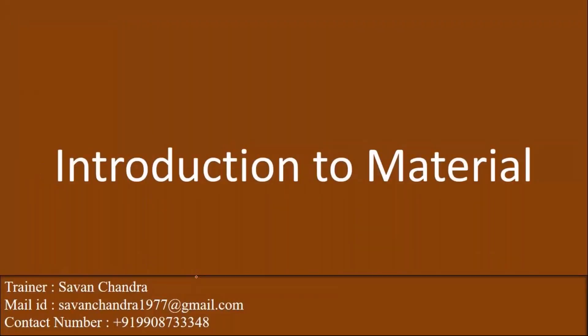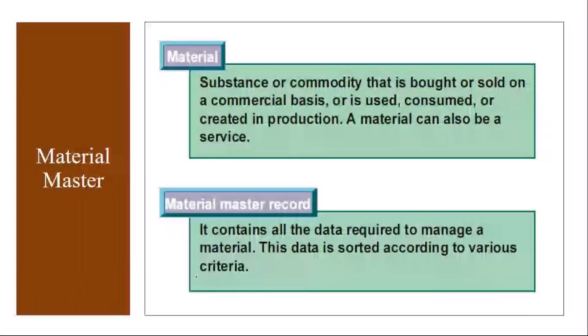First, we will start with an introduction to material. A material can be a substance or commodity that is bought or sold on a commercial basis, or is used, consumed, or created in production. A material can be anything — it can be a raw material which is purchased, a finished product which is produced and sold to customers, or it can be a spare part or stationery.